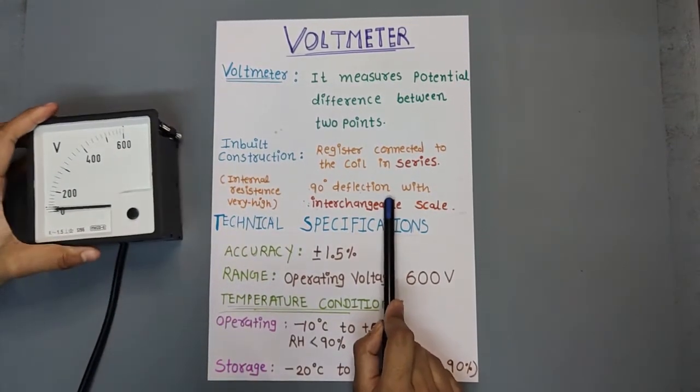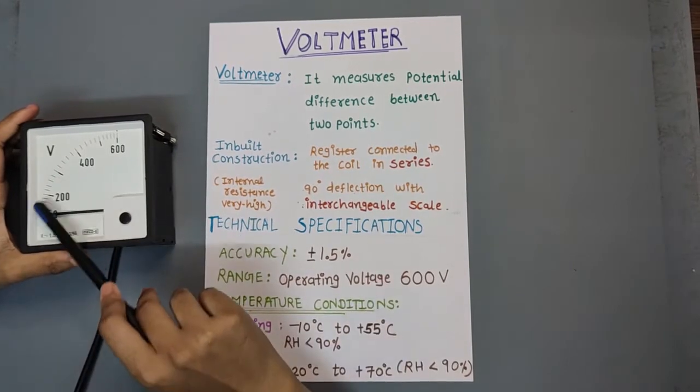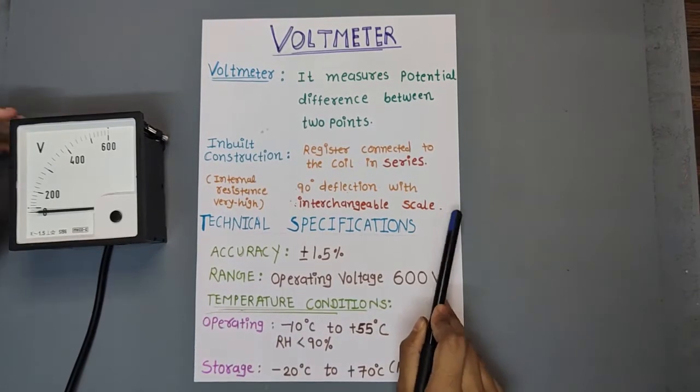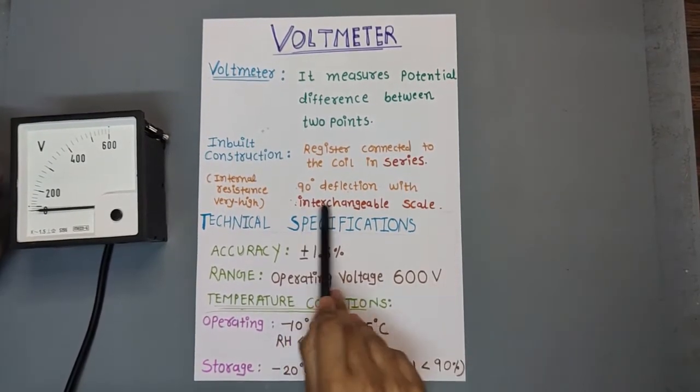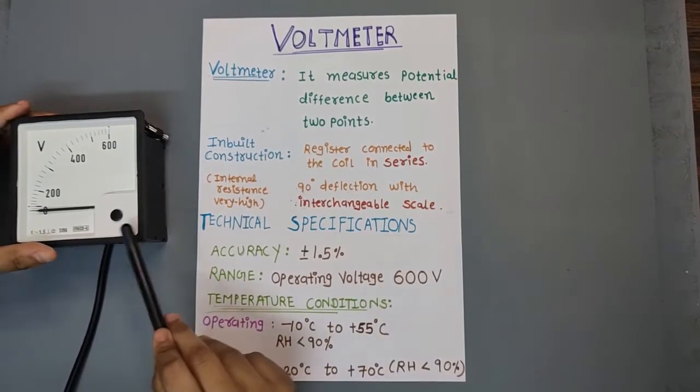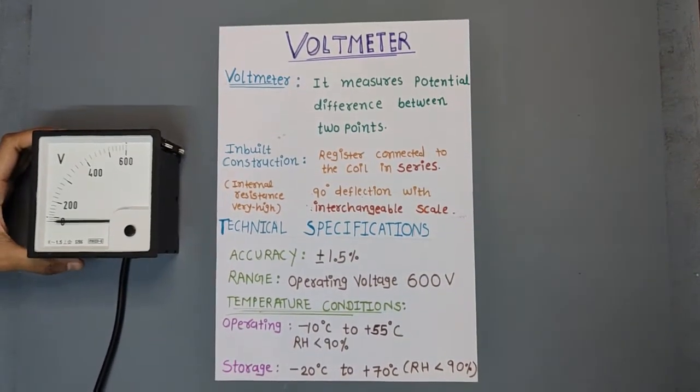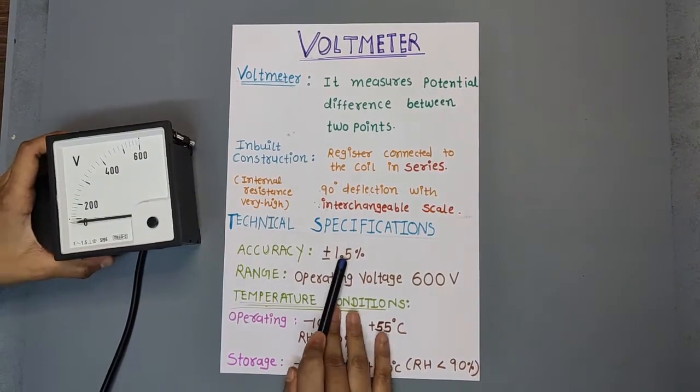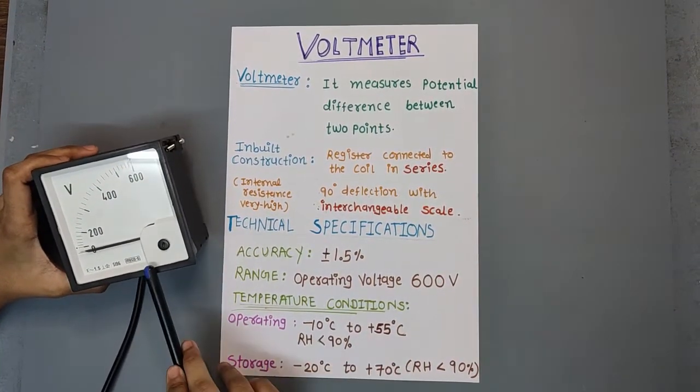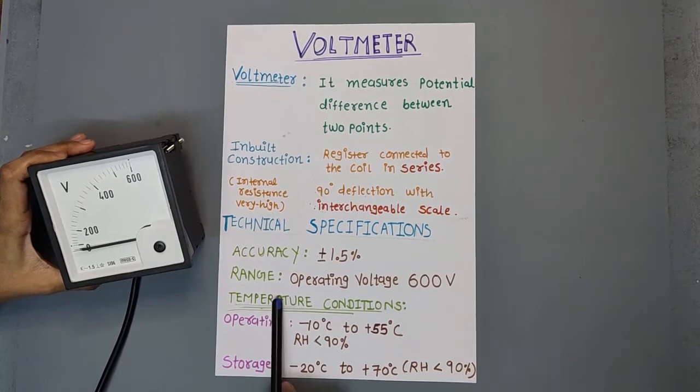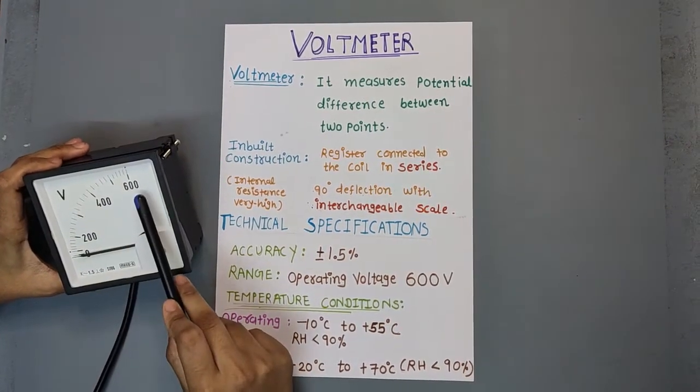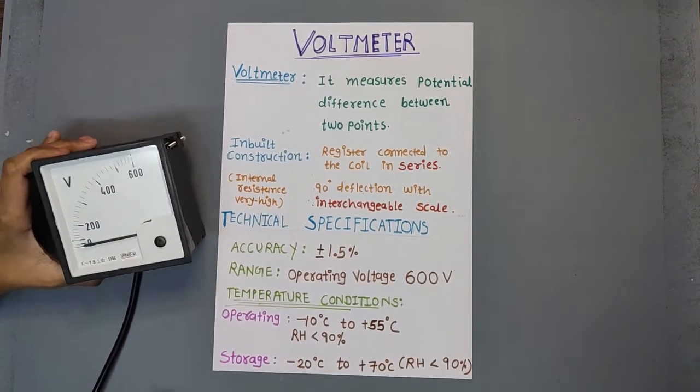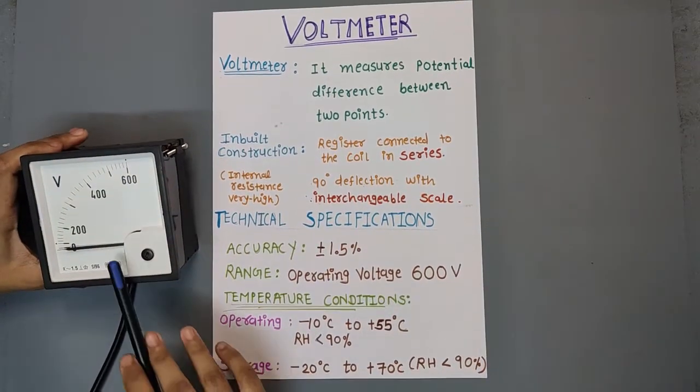Here you will get another feature. You will get an interchangeable scale with 90 degree deflection. We talk about the temperature conditions.